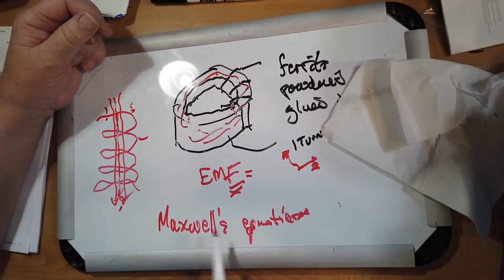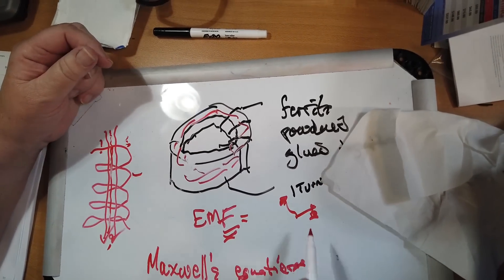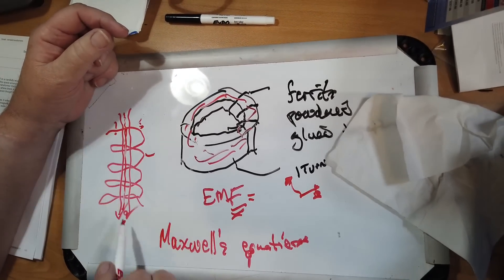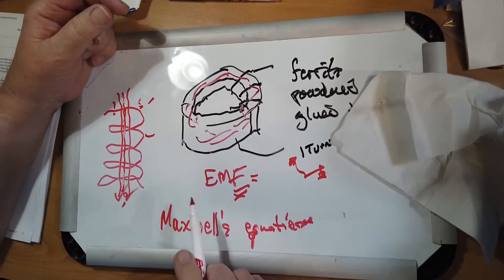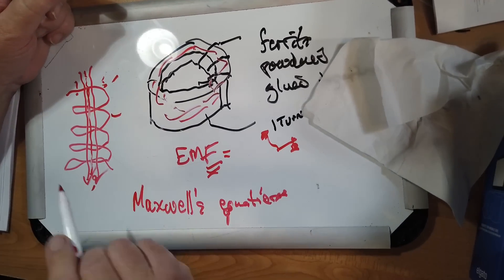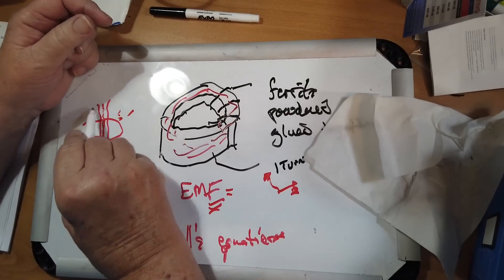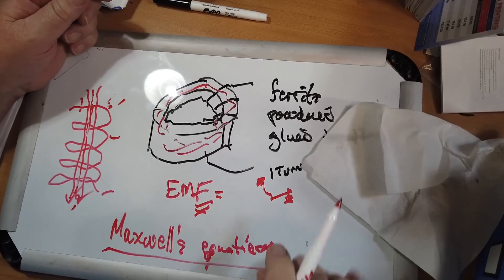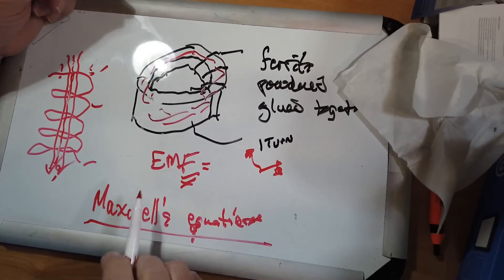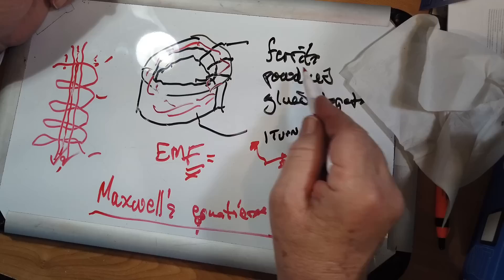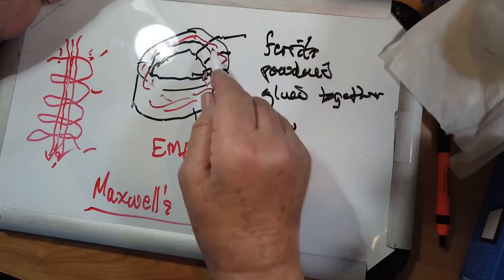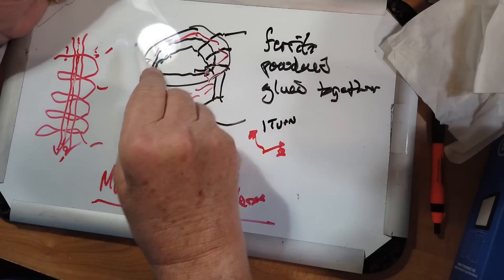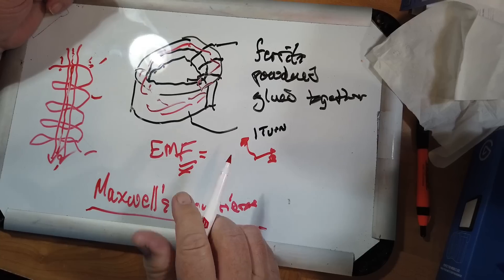And when you put a moving, remember this only works at AC, when you put a changing, a constantly changing magnetic field, it will induce a constantly changing electric field in this. And it doesn't matter where it is inside the coil. It will do it by Maxwell's equations. Maxwell's equations make the actual ferrite of the metal not important, because it doesn't matter where inside here the magnetic field is.